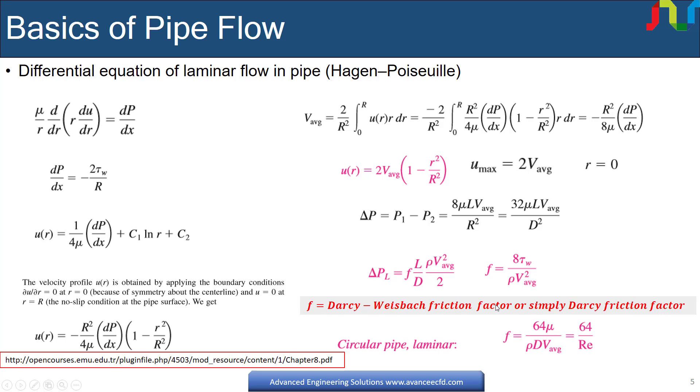Here f is the Darcy friction factor. This can be shown that for the circular laminar pipe flow, by comparing these two equations, we have friction factor is equal to 64 divided by Reynolds number. This should not be confused by the coefficient of friction also called Fanning friction factor named after American engineer John Fanning, which is equal to one-fourth of friction factor.